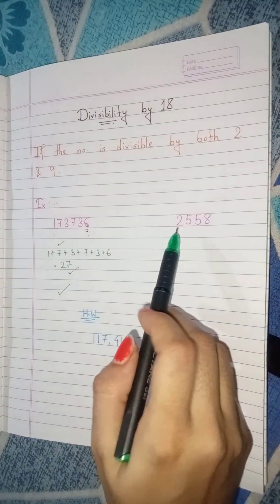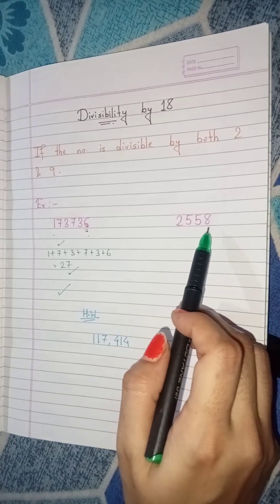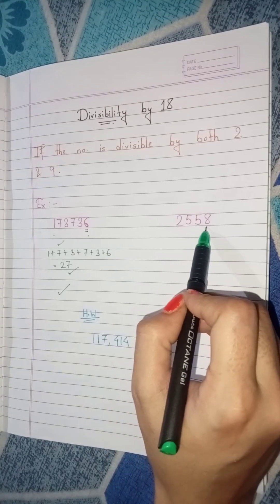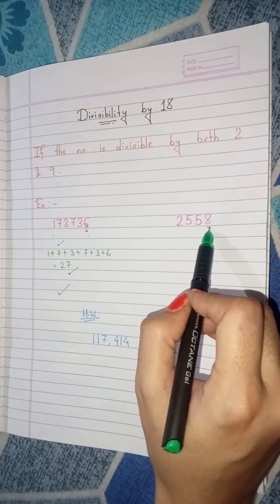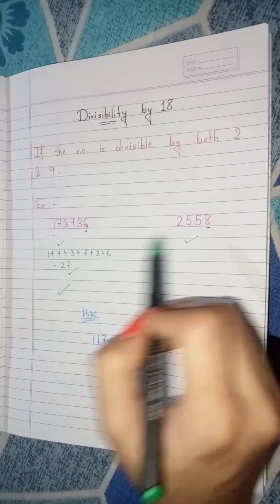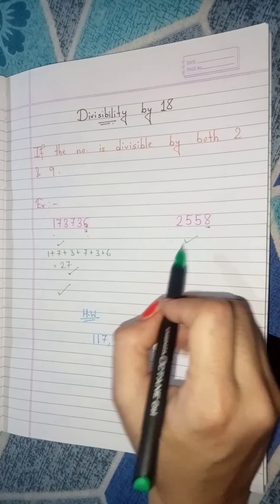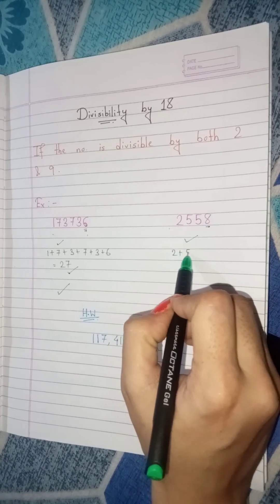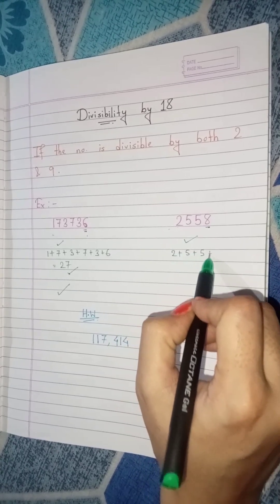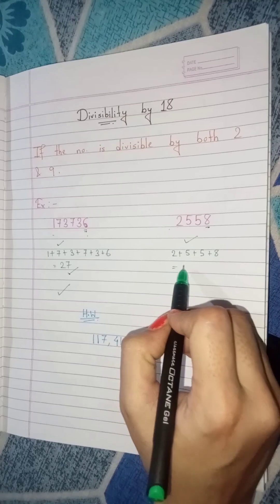Next, 2558. Here we see that the last digit 8 which is an even number, so the number is divisible by 2. But if we add the digits of the number, 2 plus 5 plus 5 plus 8, we get 20.